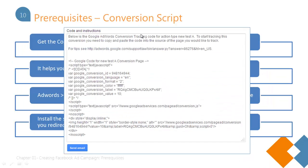You are supposed to put the conversion script on the post-submission page. In addition, that gives you another prerequisite, which is a thank you page. You need to create the post-submission page and embed this script there. So that can be your fourth prerequisite.